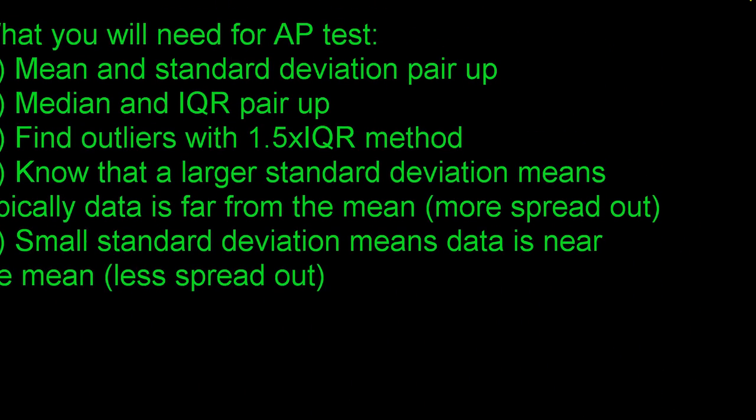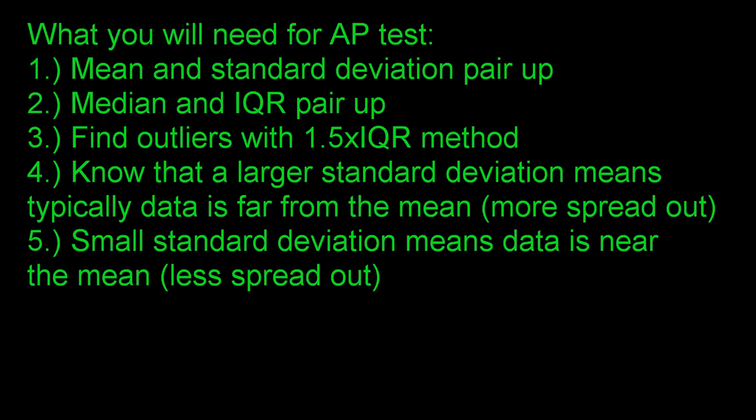For the AP test, know that mean and standard deviation always pair up together — you never talk about a mean without the standard deviation, because standard deviation measures how far typical data is from the mean. Similarly, median and IQR always pair up together, because the median is the dead center of your data and the IQR measures the middle 50% surrounding the median.